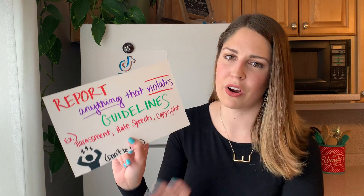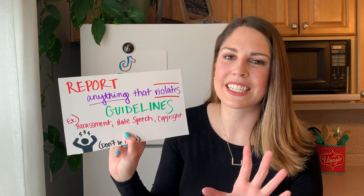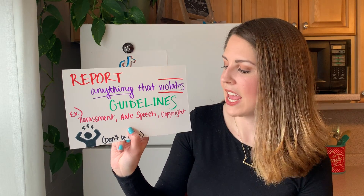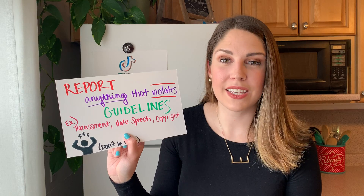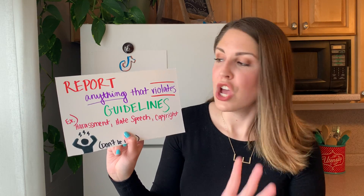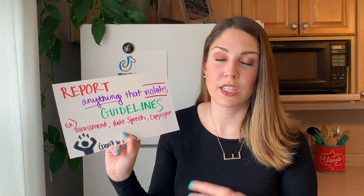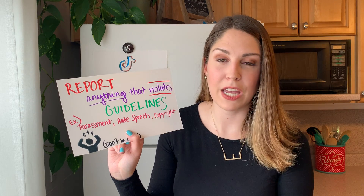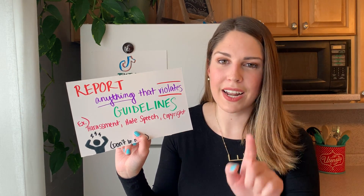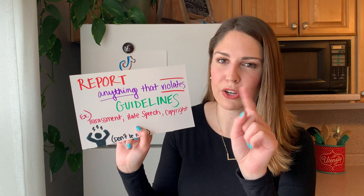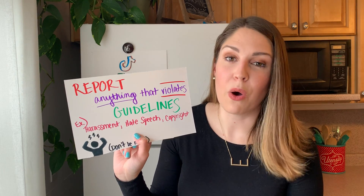The other tip that's super important is reporting anything that violates guidelines, such as harassment, hate speech, copyright, or anything you think is inappropriate — you can report it. There are two different ways to do that. You can either go onto the person's profile page who posted the video and report them, or you can click right on that video — there'll be a little arrow — and if you click that, you can report the video itself.